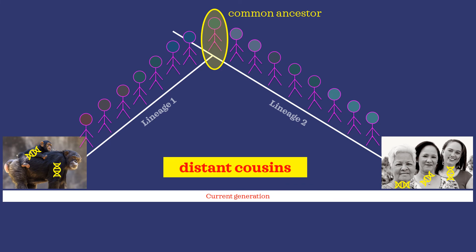This means that the amount of time between the last shared ancestor and the current generation was only enough time to accumulate 4% differences in our DNA. Had more time passed, we would expect to see more differences.